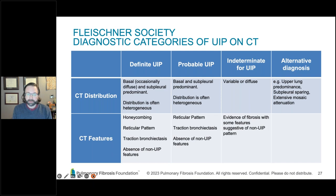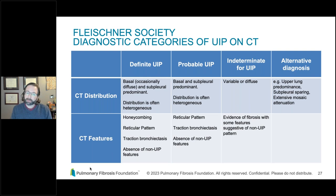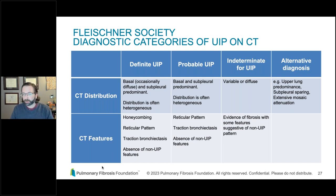The current guideline framework categorizes HRCT findings into four patterns: definite UIP (usual interstitial pneumonia), probable UIP, indeterminate, or alternative diagnosis. UIP is an imaging or pathologic diagnosis — not the underlying disease itself — but what we would expect to see on biopsy or imaging in certain conditions. If you're reading your imaging report, these are the types of terms and categories you'll encounter, and they guide therapy and diagnosis.